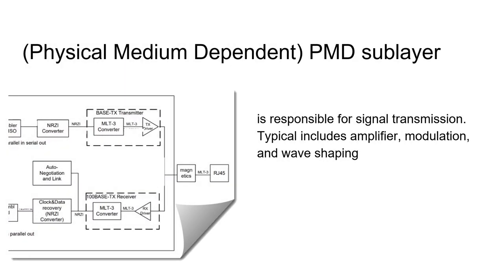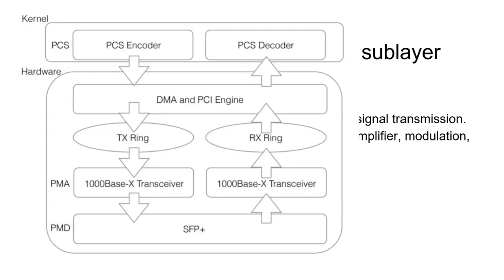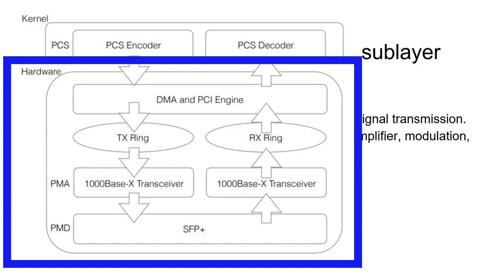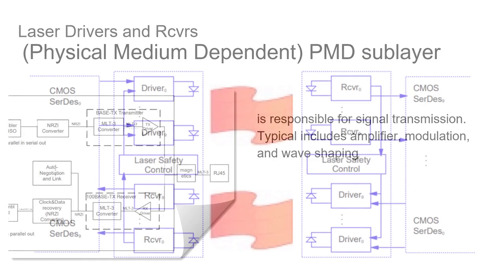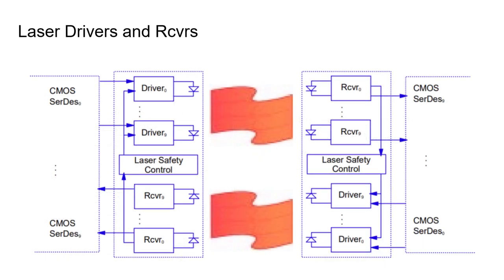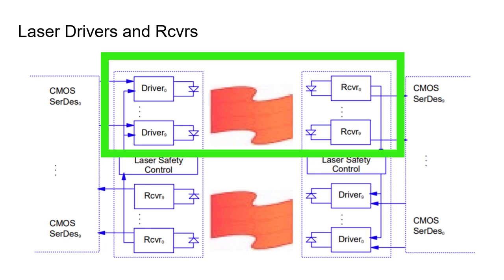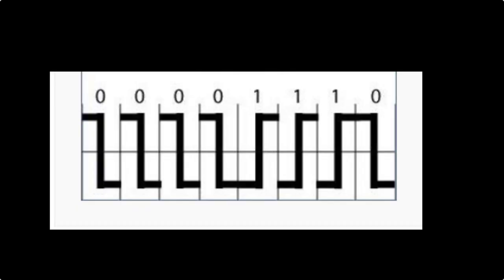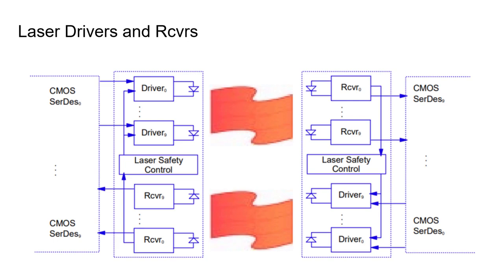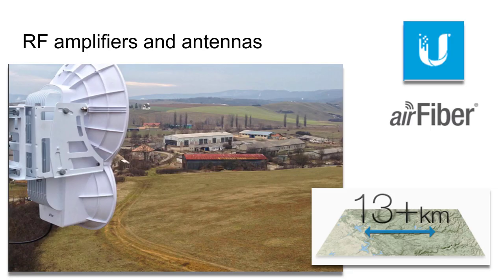The physical medium dependent or the PMD sublayer is responsible for the signal transmission. This includes amplifiers, modulation, and wave shaping. Here we see the PDM sublayer of two hosts. We see drivers and receivers. These are LEDs for laser optics. And then we have optical sensors on the receiver side. At the PMD layer, we can drive as little as 2 volts peak to peak on twisted pair. We can drive the LED or the laser optics and receivers on fiber optics. Or we can drive up to 200 watts power to an antenna that can pump a signal 13 kilometers away.